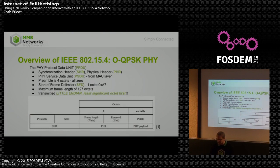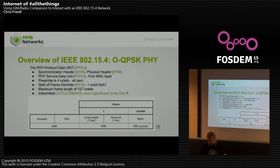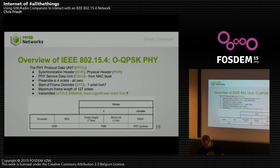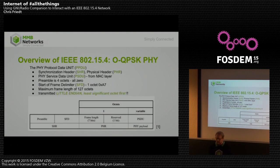The physical protocol data unit has a synchronization header consisting of a preamble of all zeros, four octets, and a start-of-frame delimiter of one byte: 0xA7. Maximum frame length is 127 bytes. IEEE 802.15.4 is a little odd in that it's little-endian, least significant octet first — that comes into play later.